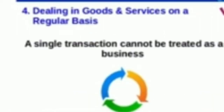Number four: Dealing in goods and services on a regular basis. A single transaction cannot be treated as a business. For example, if a person sells his or her domestic radio even at a profit, it will not be considered a business activity. But if she sells radios regularly, then it is called a business activity.